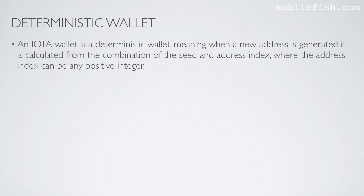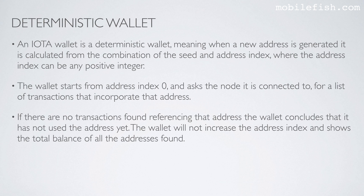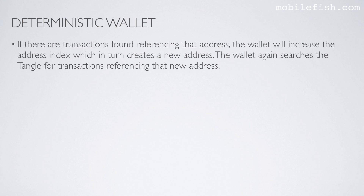An IOTA wallet is a deterministic wallet, meaning when a new address is generated, it is calculated from the combination of the seed and address index, where the address index can be any positive integer. The wallet starts from address index 0 and asks the node it is connected to for a list of transactions that incorporate that address. If there are no transactions found referencing that address, the wallet concludes it has not used the address yet and will not increase the address index. If there are transactions found referencing that address, the wallet will increase the address index, which in turn creates a new address.